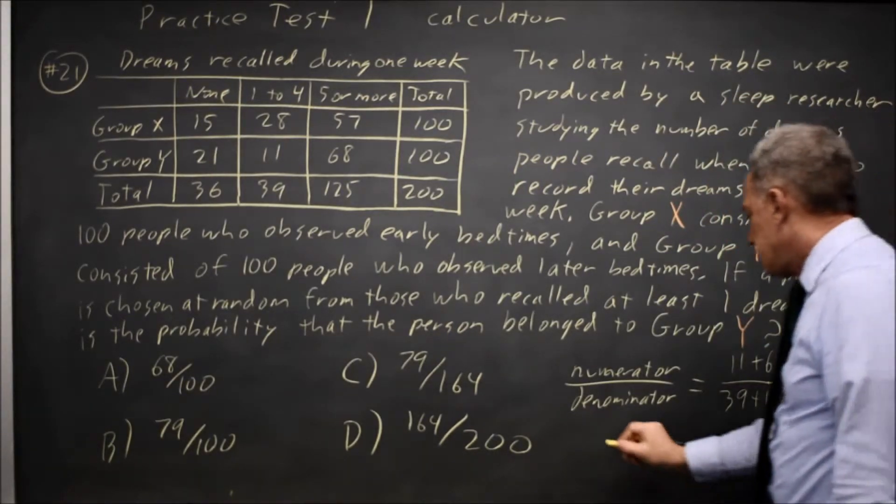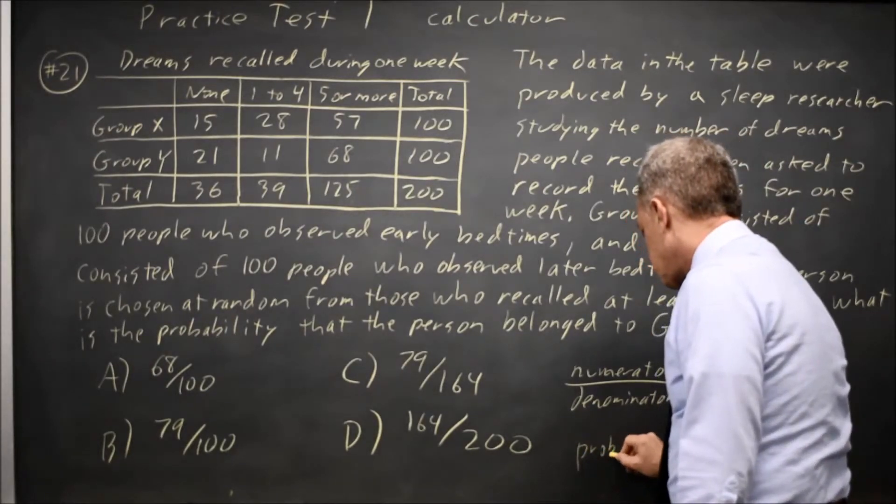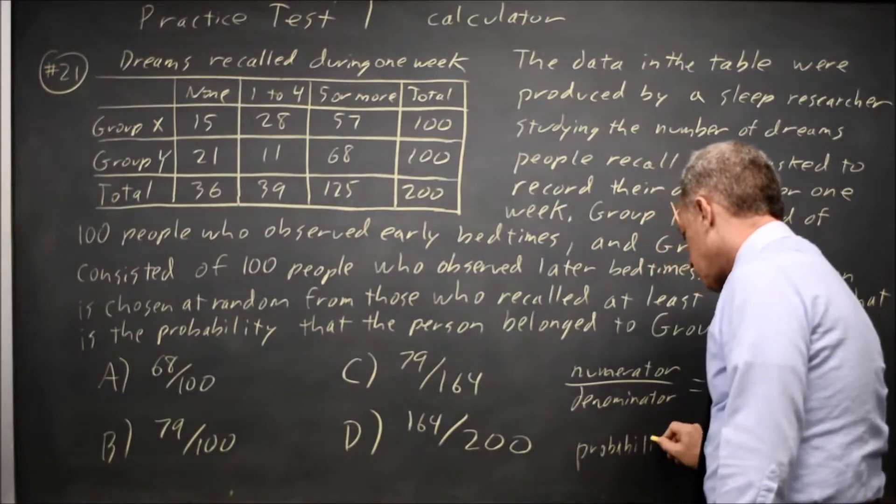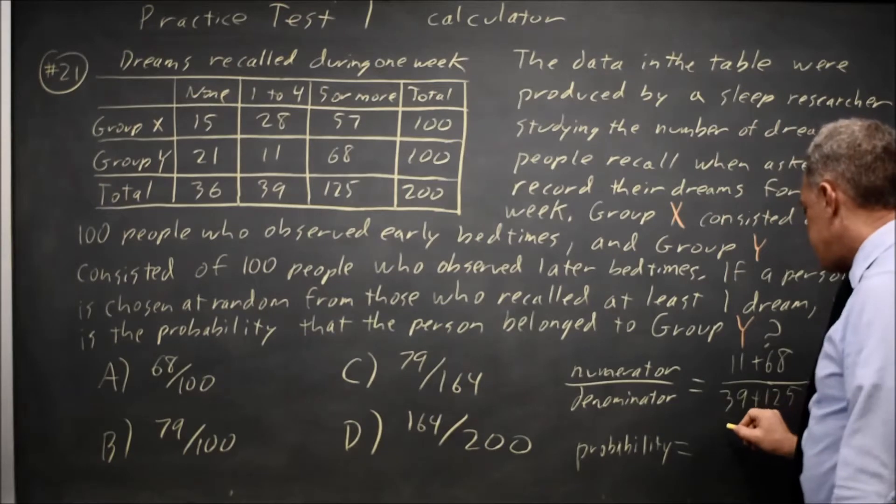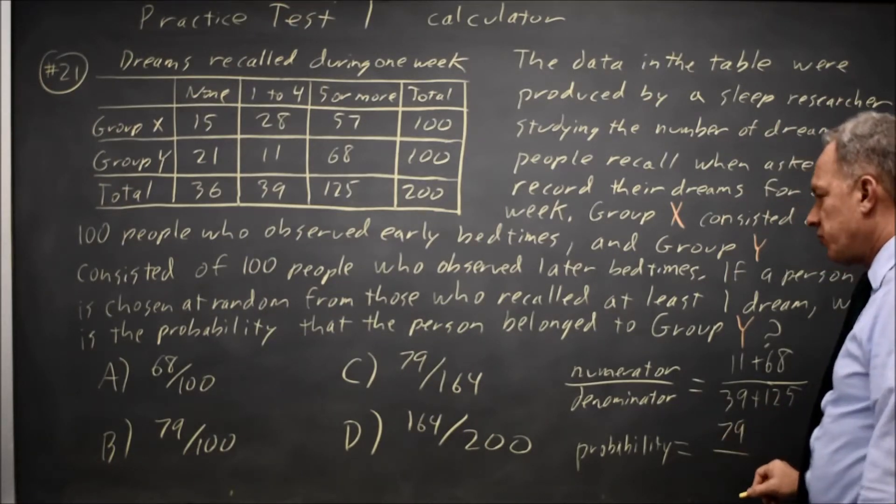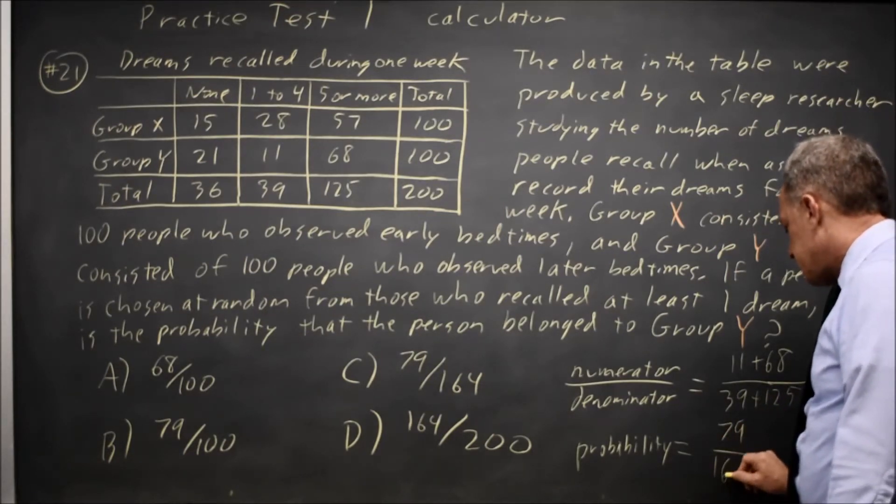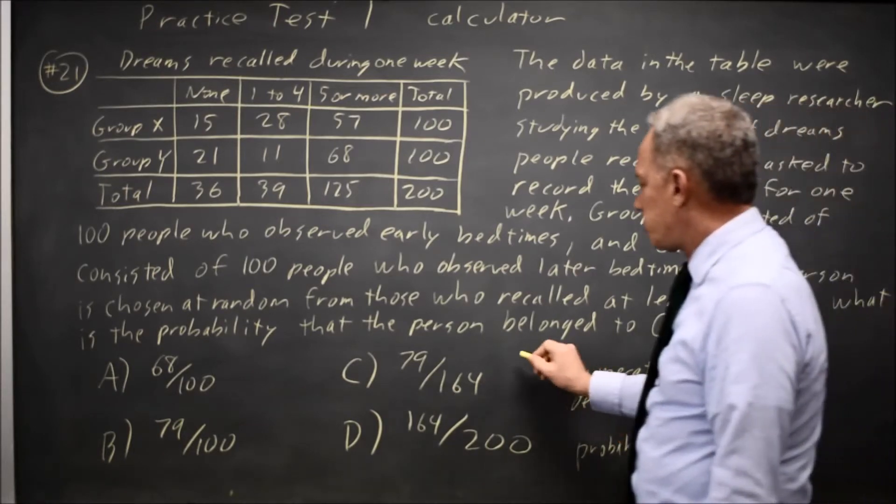So our probability is 11 plus 68 is 79, over 39 plus 125 is 164. That would be choice C.